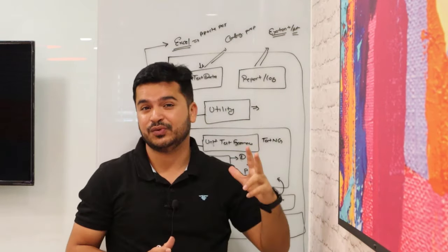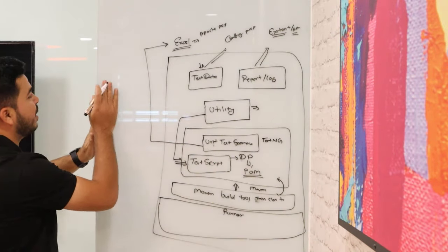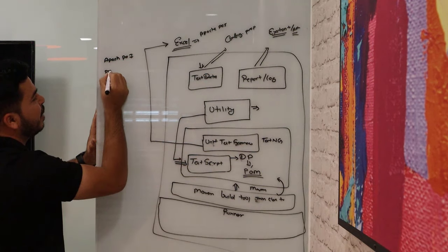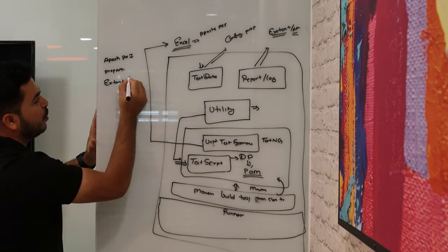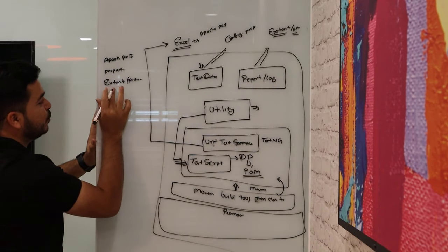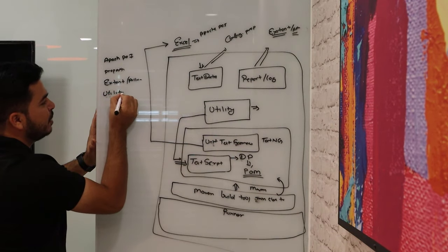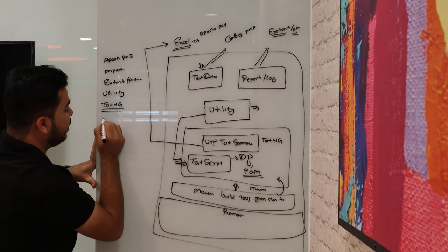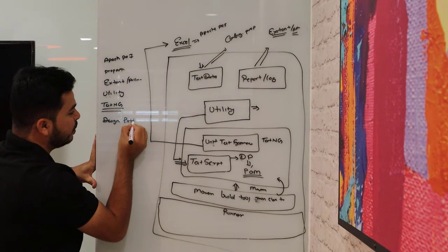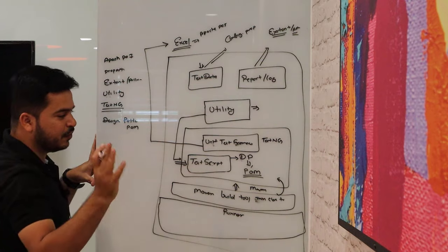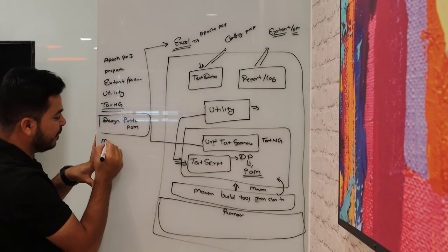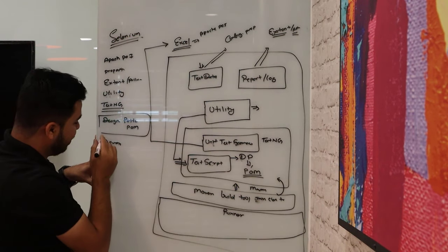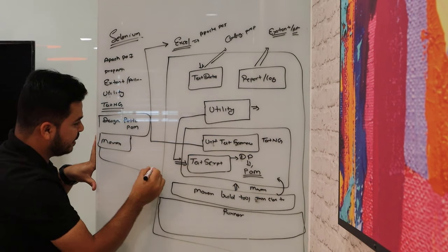They will be more interested about the different tools that you're using. In this process, suppose you are explaining that you know Apache POI, you know properties file — like how to read the properties file. You are telling how to use Extent Report or Allure Report. You're also telling that you know how to create custom utilities, which is a very important part. You're also telling that you know TestNG — you might get a lot of questions from TestNG in interviews. Then you're telling you know design pattern, which is a very good point. Make sure when you are explaining, you read about Page Object Model or Singleton pattern, whatever design pattern you're using. You're also telling that you know Maven.